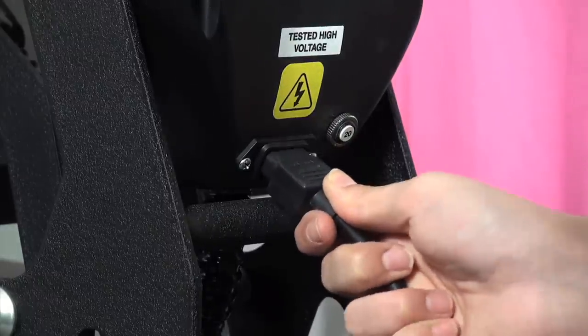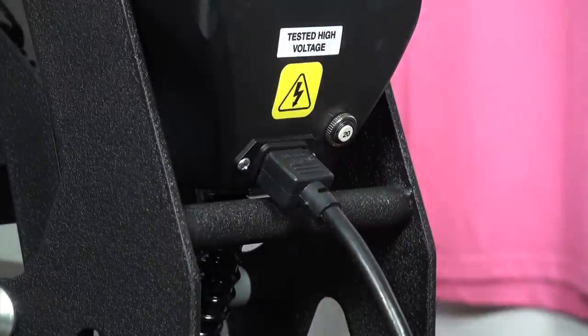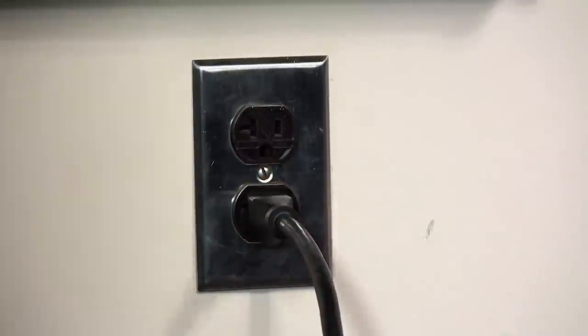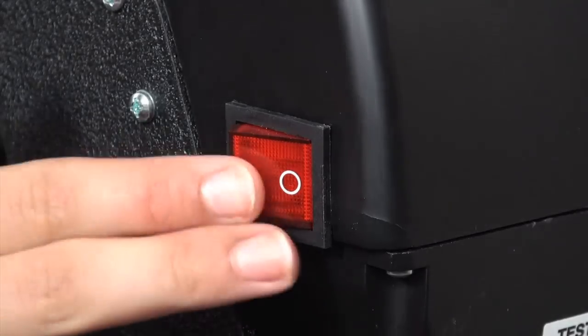Plug the power cord into the back of the press and the other end into the dedicated outlet. Turn on your press and perform a test print.